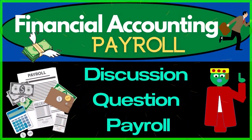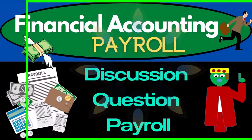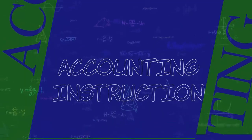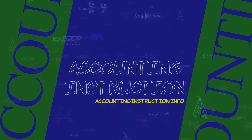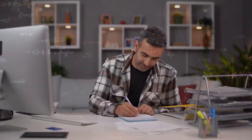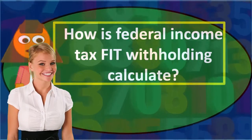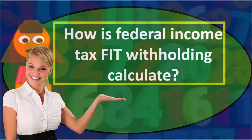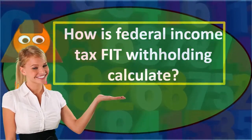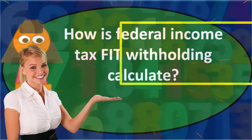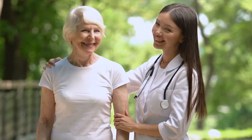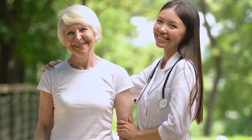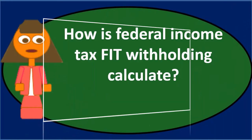In this discussion we will discuss how federal income tax (FIT) withholding is calculated. The FIT withholding is one of the most complex withholdings to calculate — more complex than things like social security and medicare — because it's based on a progressive tax system rather than a simple flat tax system.